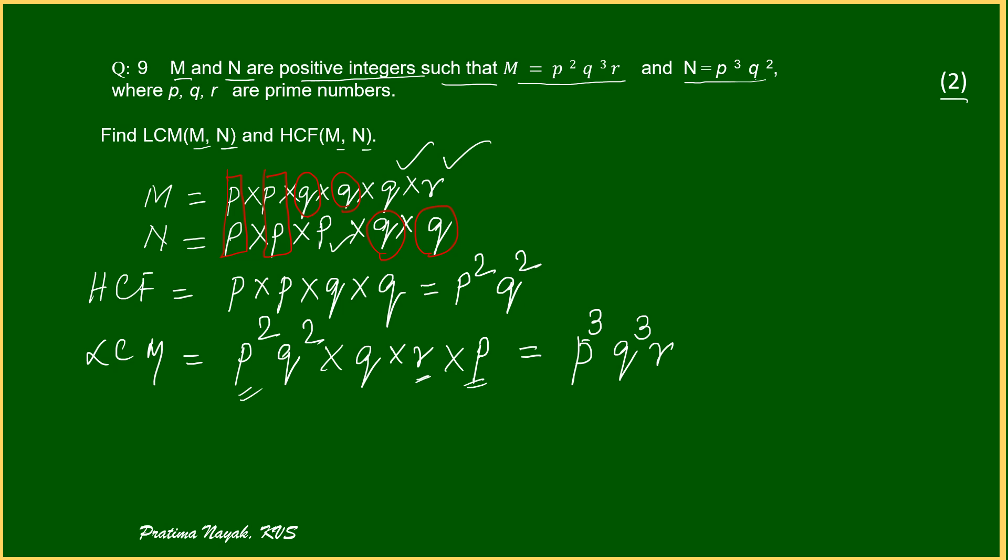If you want to get it in short, I suggest another method, shortcut method. What you will do? You will write HCF is equal to take p square and p cube. What is minimum? p square is minimum. Write down. Then take q, q here cube, here q square. What is the minimum power? 2 power. So, here you will write the common thing and minimum power. r is not in N. So, it will not come in HCF here.